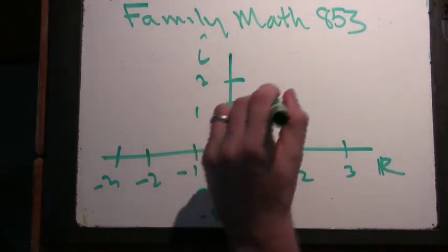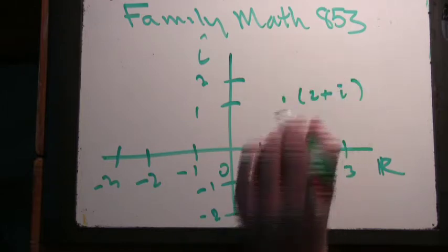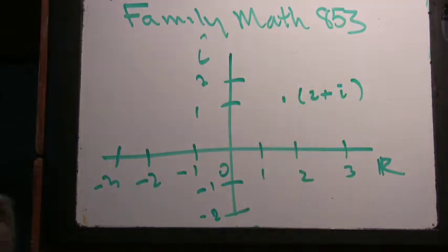So like this point here, 2 plus i. So the Gaussian integers would be a plus bi where a and b are both integers? Yeah, that's right.